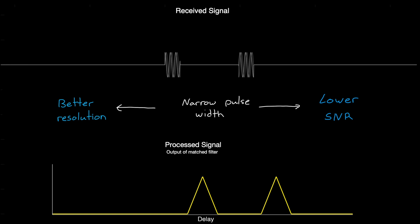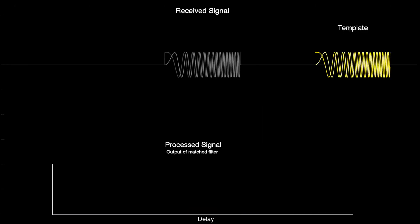But there is a way to increase resolution without having to decrease SNR, and that is by choosing a different pulse modulation scheme. For example, if we look at the chirp signal, or the LFM pulse, we can see how this is the case. This waveform starts with a low frequency signal that increases linearly throughout the pulse. And our template is the exact same.